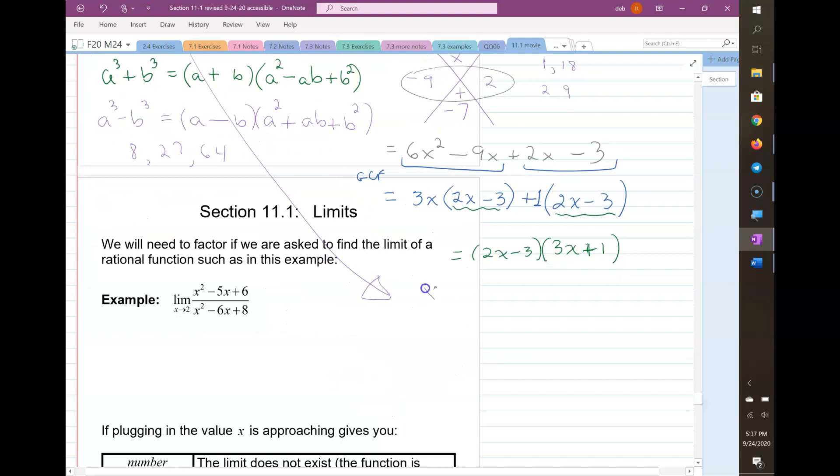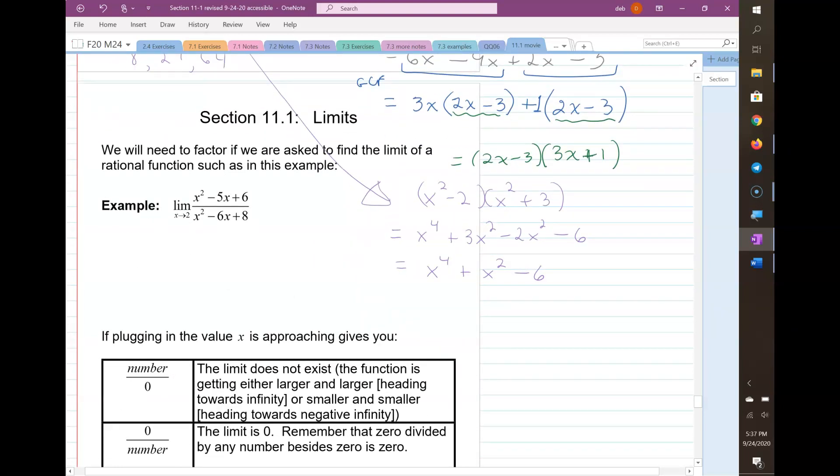If I start with (x² - 2)(x² + 3), well, my result when I FOIL is going to be x⁴ + 3x² - 2x² - 6. So combine like terms, get x⁴ + x² - 6. Well, this is called quadratic in form because it looks sort of like the quadratic of ax² + bx + c, only I have it to the 4th power here and to the 2nd power here. As long as this relationship is true, like you could have ax⁶ + bx³ + c, that is also considered quadratic in form.